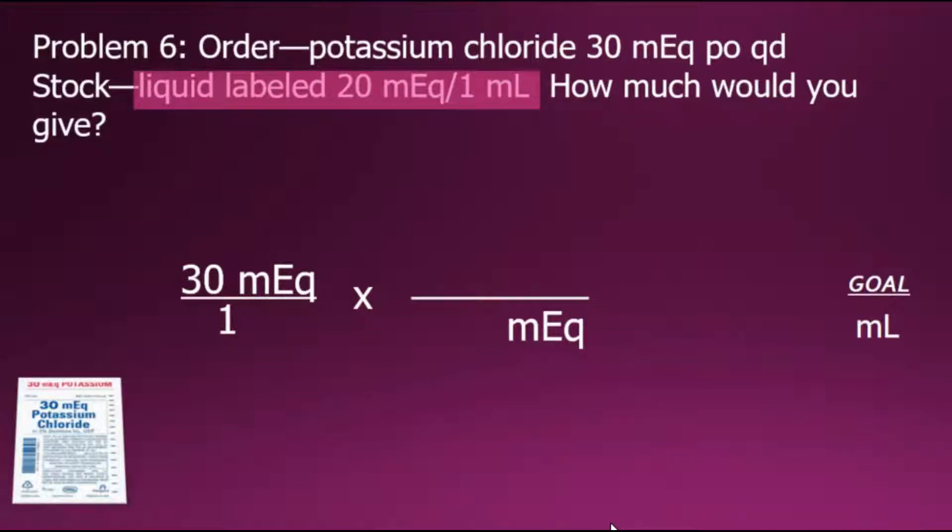The potassium chloride on hand, shown in the problem, has 20 milliequivalent equal to 1 milliliter. Expressing equivalent values in fractional form, shown here, has an overall value of 1, a very special 1, which when multiplying by 1 doesn't change a value, but will allow us to convert from one unit to the other in our multidimensional analysis.